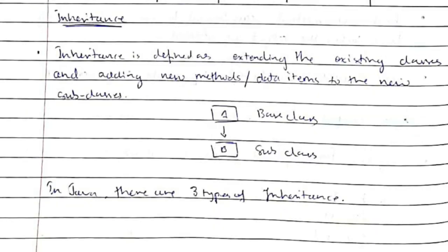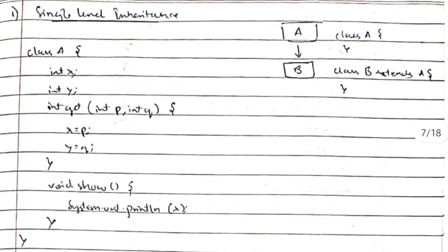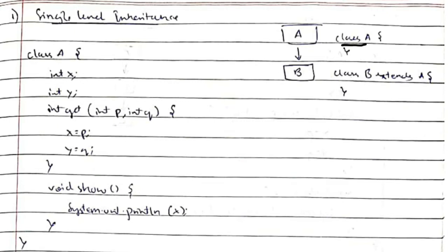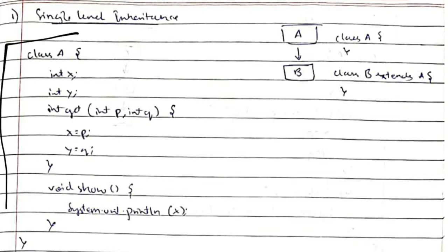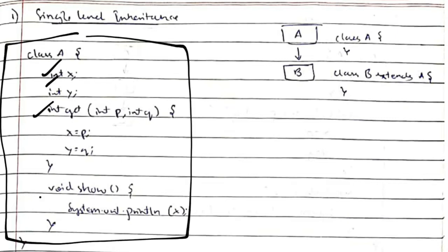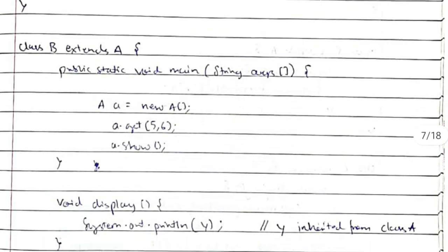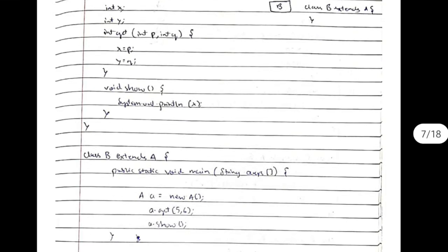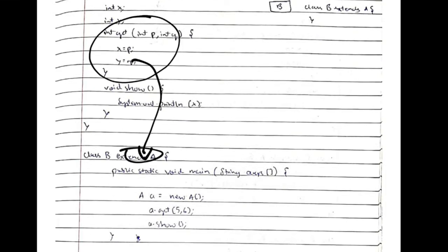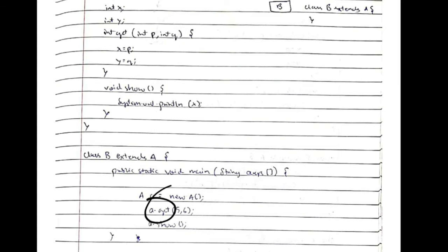Inheritance means getting the same features from a parent class and being able to edit values in the subclass. There are three main types. The first is single-level inheritance: class B extends class A. 'extends' is the keyword used to inherit properties from a superclass. Class A has two variables and two functions; when class B extends A, all variables and functions of A come into B — they won't be visible directly but can be accessed from class B.